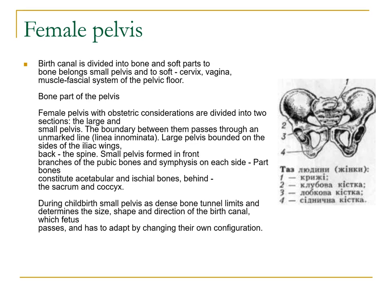The large pelvis is bounded on the sides by the iliac wings and at the back by the spine. The small pelvis is formed in the front by branches of the pubic bones and the symphysis; on each side, the acetabular and ischial bones; and behind, the sacrum and coccyx. During childbirth, the small pelvis extends both tunnel limits and determines the size, shape, and direction of the birth canal through which the fetus passes.